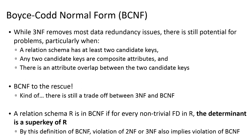Based on this definition, a violation of second normal form or third normal form would also be a violation of BCNF. This is just the same pattern we've seen with all of our normal forms — to be in a higher level normal form, you have to meet all the criteria for the lower level normal forms.